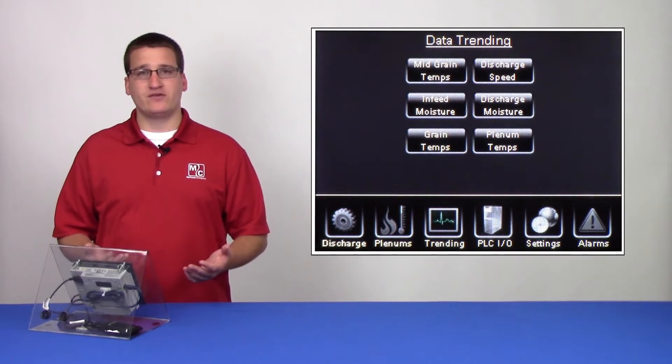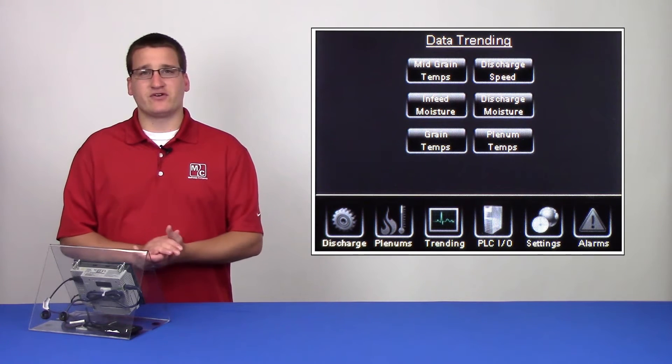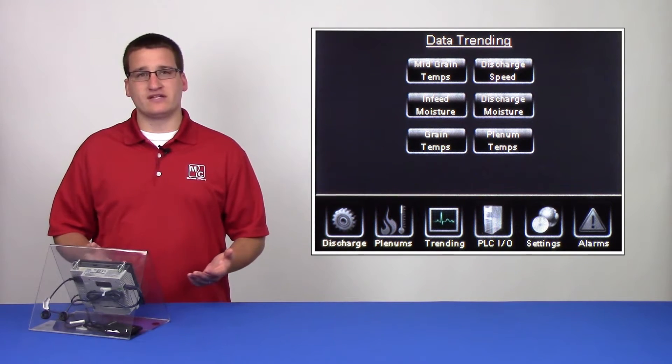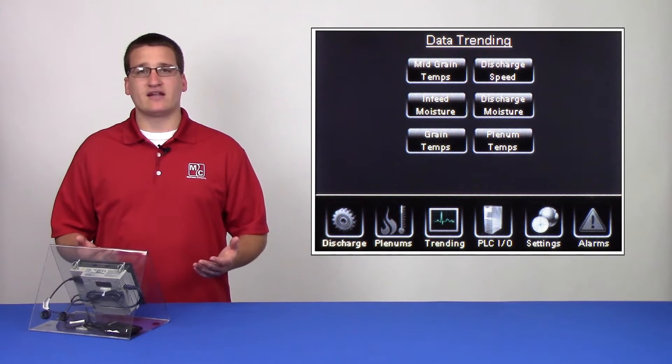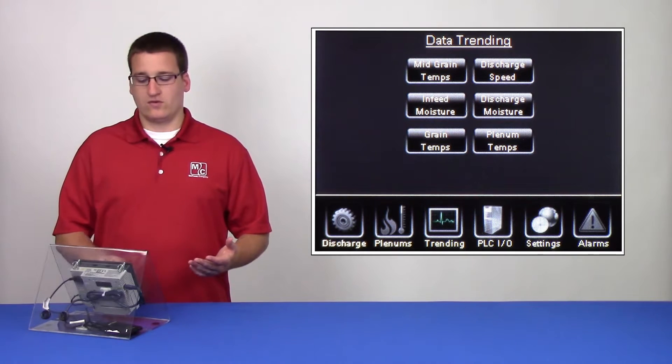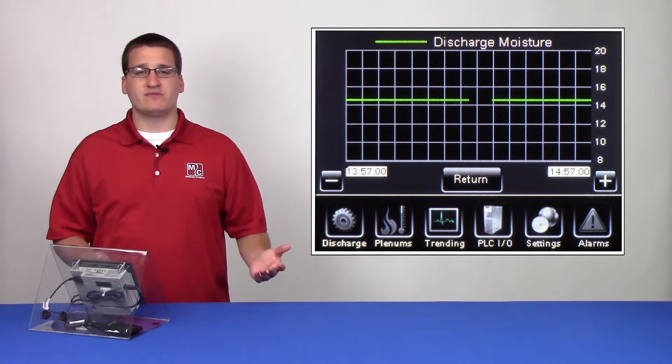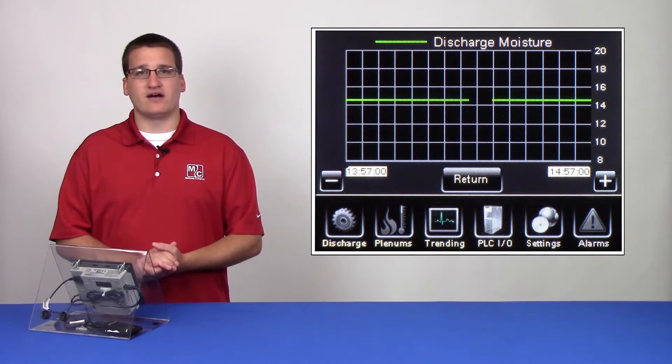Next we have the trending menu. From here, the user can see several different graphs that will plot past running data. This is good for analyzing how the dryer has been performing. For example, we can look at a graph of past dryer moisture readings and get an idea of how the machine has been running for the past several hours.